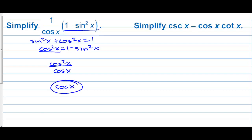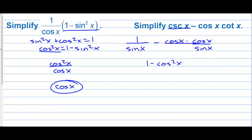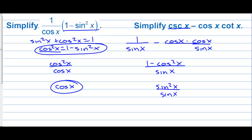Simplify cosecant minus cosine times cotangent. Let's change everything into sines and cosines. We have one over sine x — that's cosecant — minus cosine of x times cosine of x over sine of x. With the common denominator of sine, cosine times cosine is cosine squared. So we have one minus cosine squared over sine of x. One minus cosine squared is sine squared. So this is sine squared x over sine of x. One of the sines cancels, and we're left with sine of x.